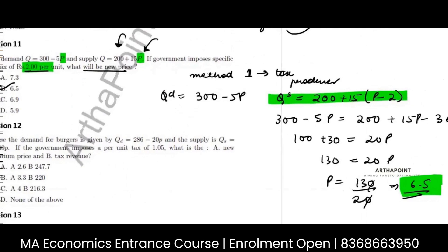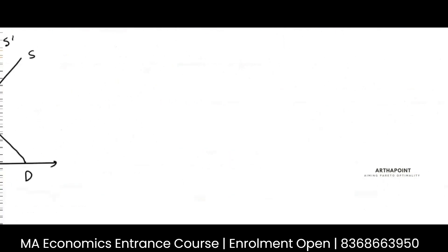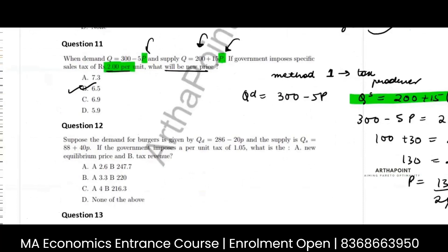If I charge a tax on the consumer, then I will do this. Quantity demanded will now be 300 minus 5(P plus 2), because I will add two in this price.